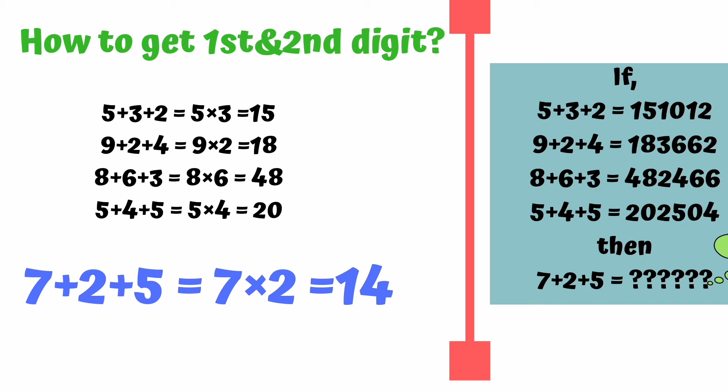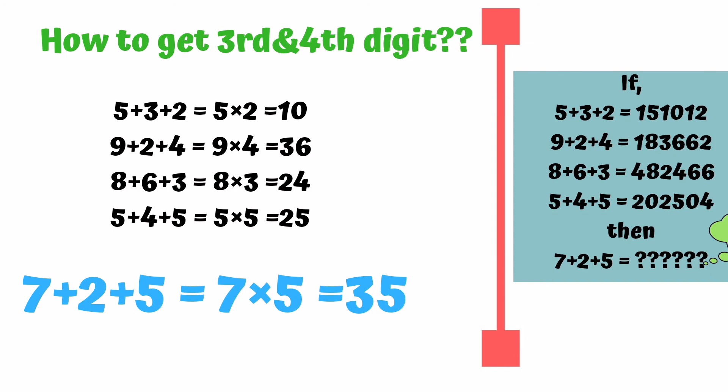Now how to get third and fourth digits. First and last digits multiply together. Then you can see: 10, 36, 24, 25. Final value of 7+2+5 means 7×5 = 35.